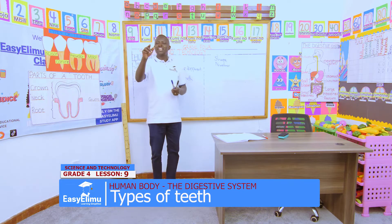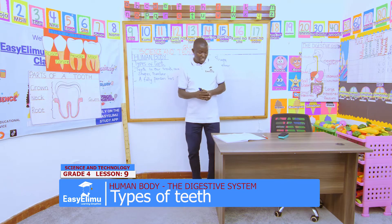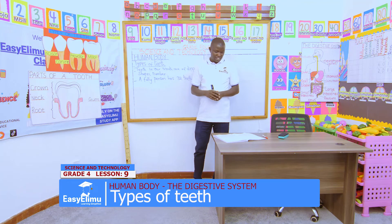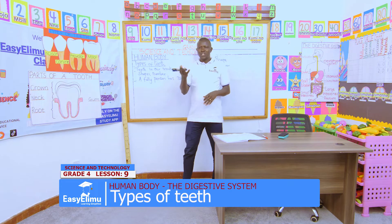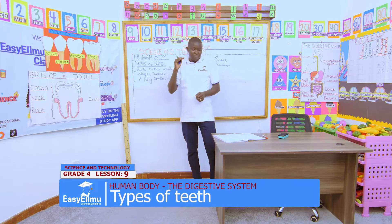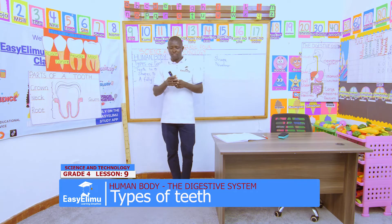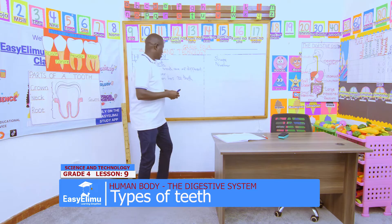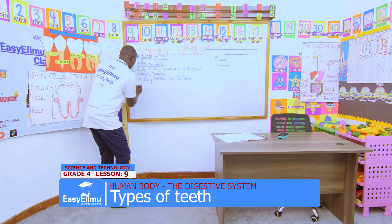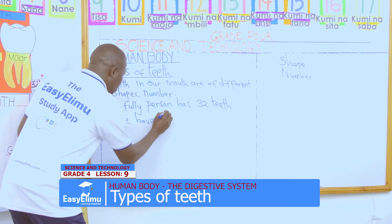Can you count the number of teeth in the mouth of your partner? Tell me, how many teeth does your partner have? They are 20, 22, 24. But when you grow to be a grown-up person, you will have thirty-two. We normally say we have four types of teeth in our body. We have four types of teeth.